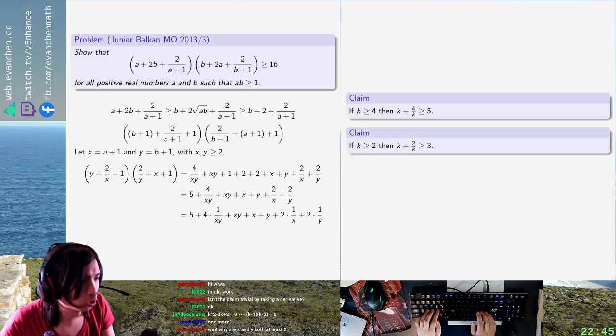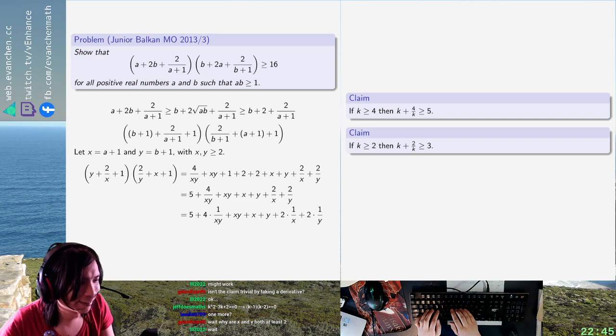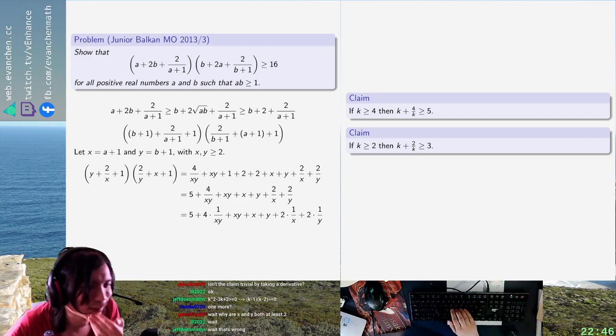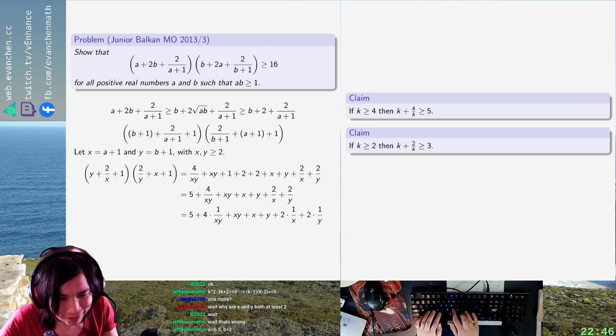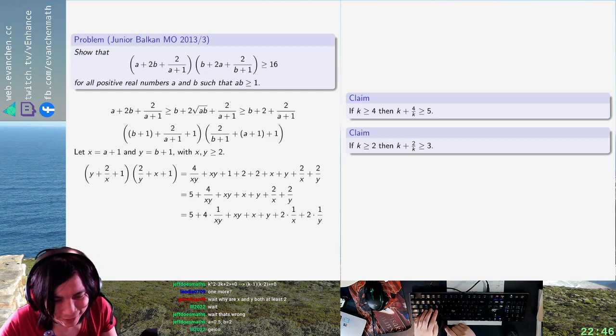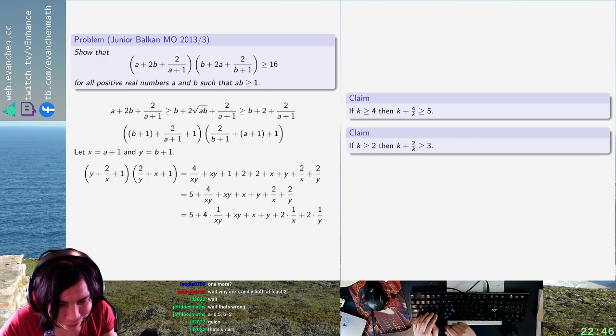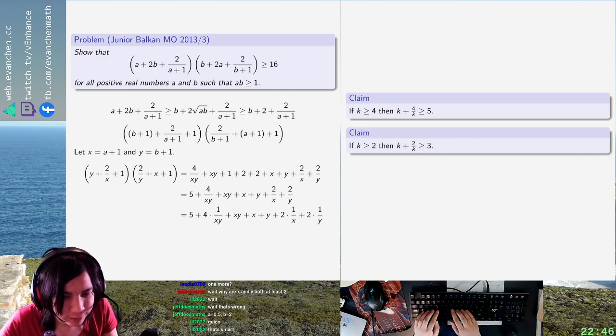Why are X and Y at least 2? Because A and B are at least... Wait, shoot. Shoot. Sorry, I screwed up. For some reason, I thought I had X and Y at least 2. Never mind. Alright. Oh, crap. Okay, so the first one is fine. That one is still okay. For the other one, I probably want to AMGM some stuff together, right?